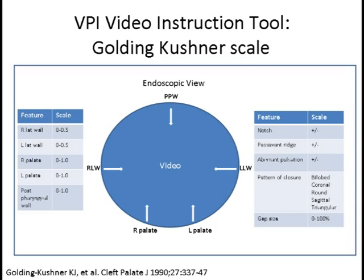Conversely, posterior pharyngeal wall movement from rest to contact with a non-mobile palate would be rated as 1.0. Other descriptive features of the Golding-Kushner Scale include notation of the presence or absence of a notch on the dorsal surface of the muscular palate, a Passavant ridge, and aberrant carotid pulsation.